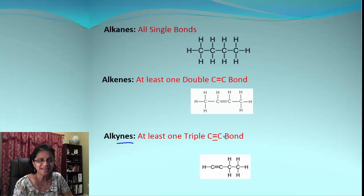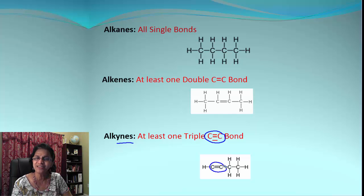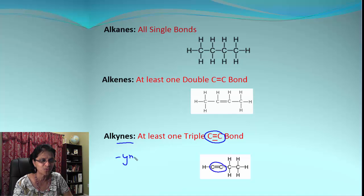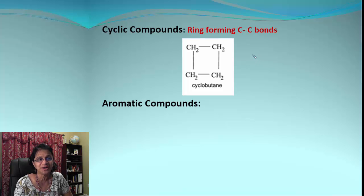The next one is alkynes. The rule for alkynes is that there should be at least one triple bond between carbon and carbon. Look at the chain: we have four carbon atoms, and between two of them there is a triple bond. Alkynes end with the suffix '-yne.'